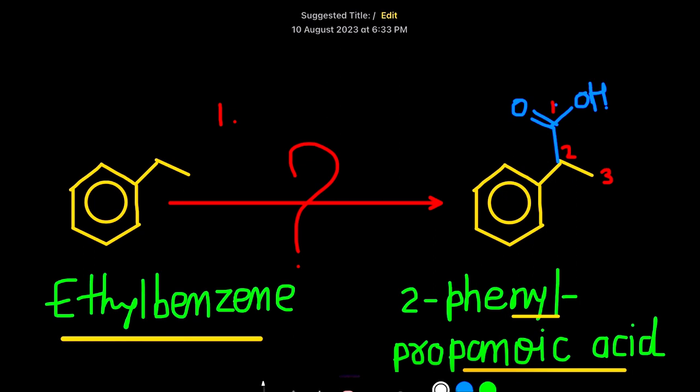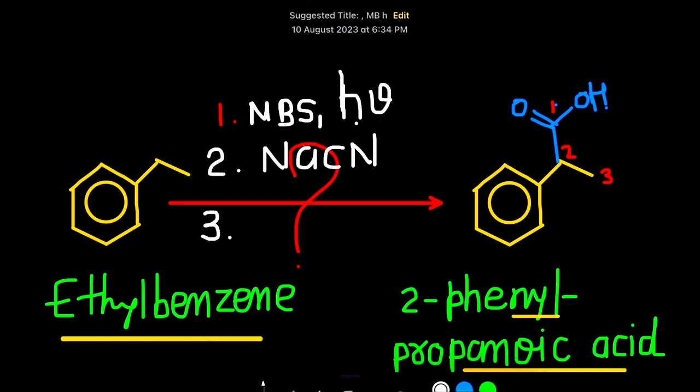We can get our desired product in three steps. First step is bromination. Second one is substitution. Third step is hydrolysis.